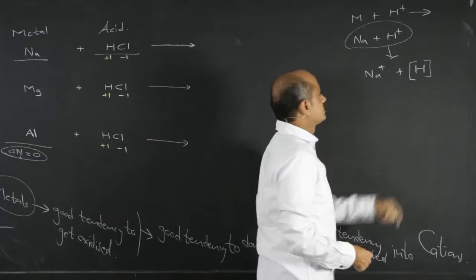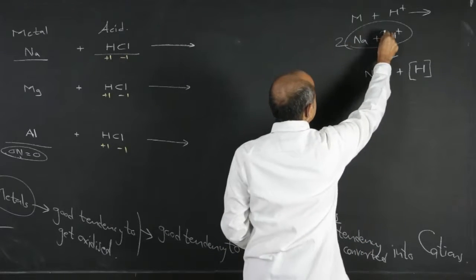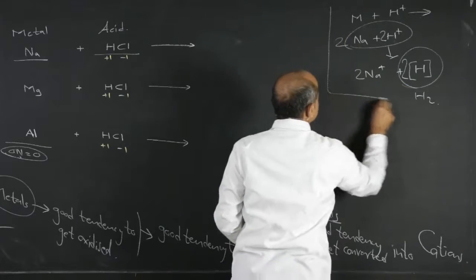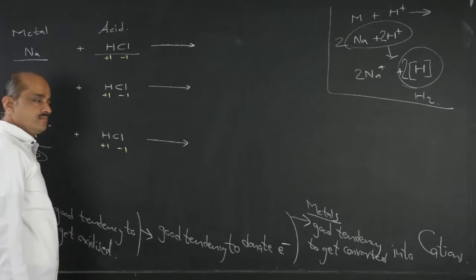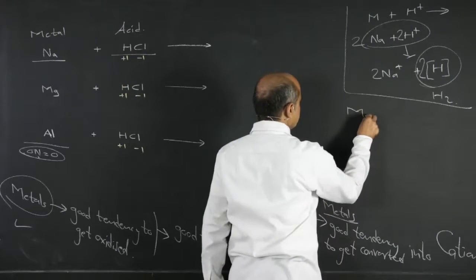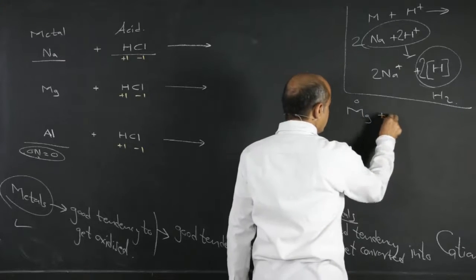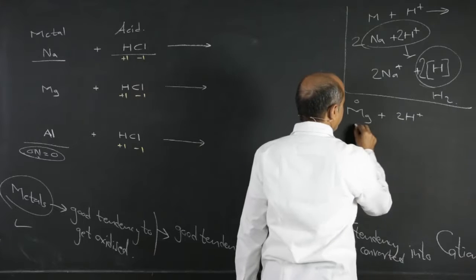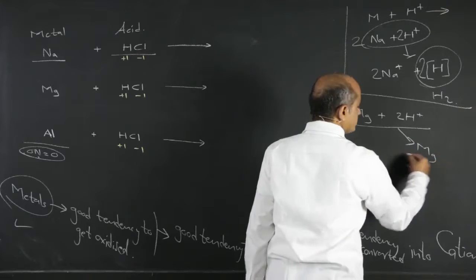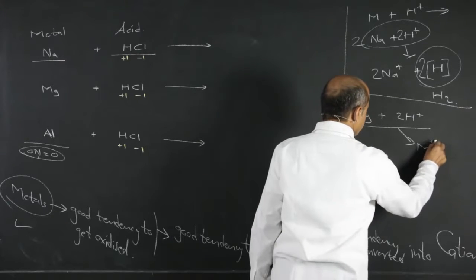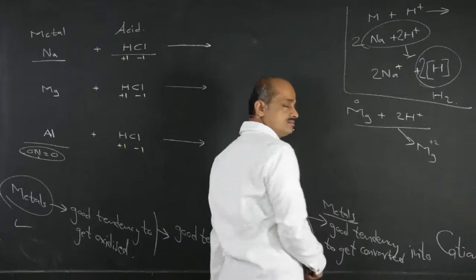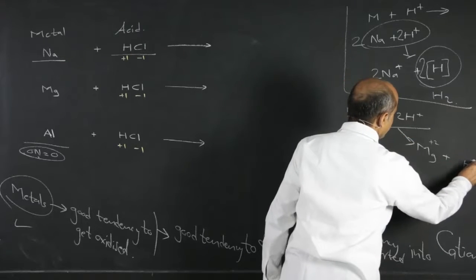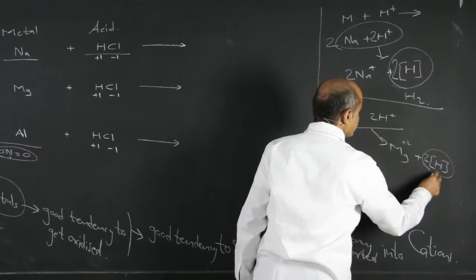Nascent hydrogen atoms combine to give H2 gas. So 2 Na + 2H+ gives 2 nascent H, which is written as H2. Similarly, one Mg in elemental form has oxidation state zero. Magnesium's oxidation number is plus 2, so one Mg makes available two electrons. Those two electrons are accepted one each by two H+ ions, giving two nascent hydrogen atoms, which combine to give H2 gas.